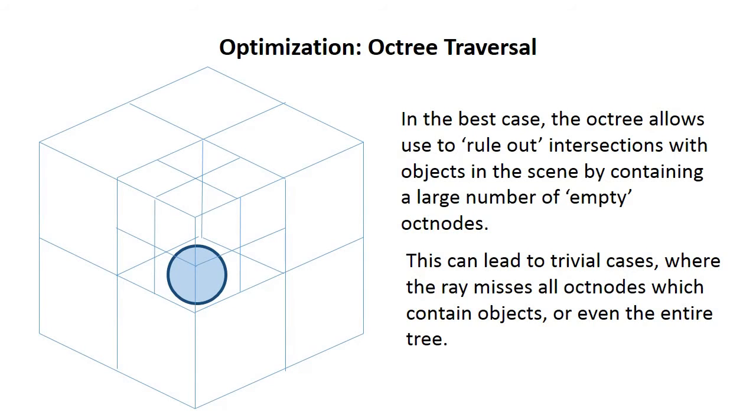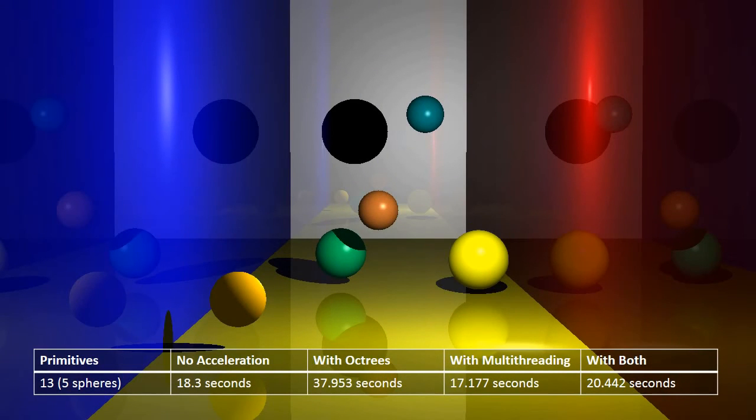We ran some benchmark tests on different types of scenes to show the effect of octrees and multithreading. In this case, this is a very simple scene, and it very clearly shows that octrees don't help you at all when you have a very small number of objects. In fact, it took basically twice as long with the octrees in place than it did without them. Multithreading doesn't help us much here either because of the overhead costs associated with starting, running, and then reconciling threads.